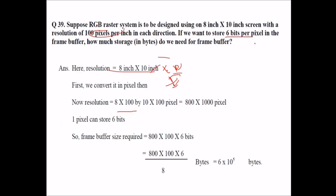Now 1 pixel can store 6 bits. This is what it is being given - 6 bits per pixel. 1 pixel means 6 bits. So the frame buffer will be this pixel into 6 bits and this will be equal to 800 x 1000 x 6 into 10 to the power of 5 bytes.